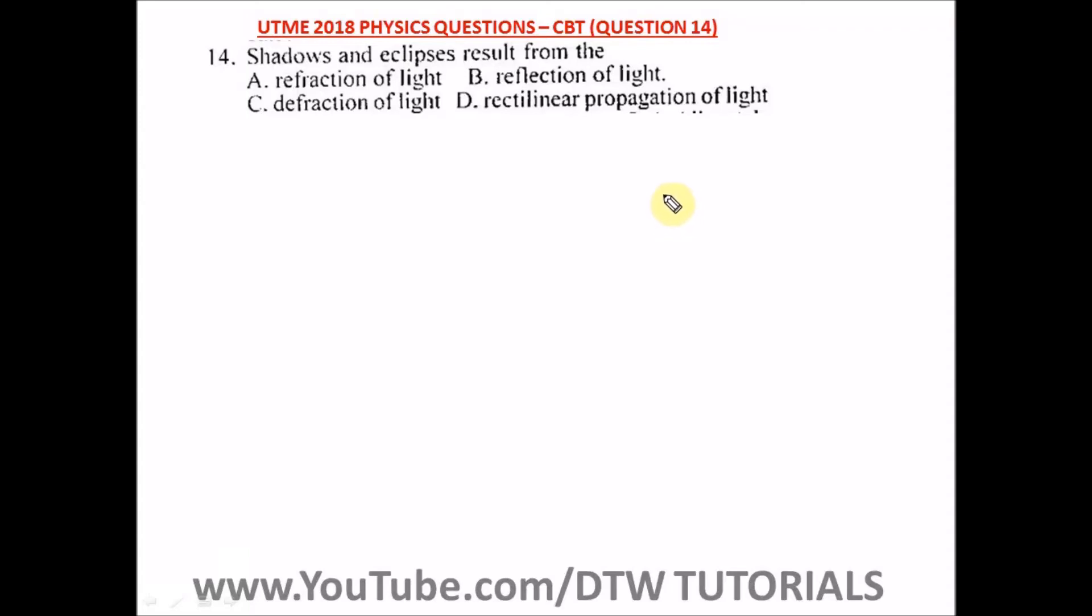Question 14 of the UTME 2018 Physics past question, that's your JAMB 2018 physics exam. It says shadows and eclipse result from: A says refraction of light, no. B says reflection of light, no. C says diffraction of light, no.